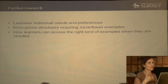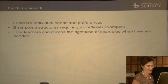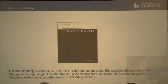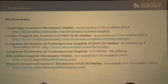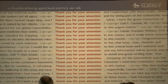Further research is needed on learners' individual needs and preferences, which structures require more examples, and — most importantly — how learners can access the right kind of examples when needed. Learners don't go to dictionaries and they don't get spoon-fed examples like in a controlled experiment. So the main goal is to give them this information when they need it. This points to the topic of my next ELEX presentation. The study just came out in IJL — contact me if you want a copy.